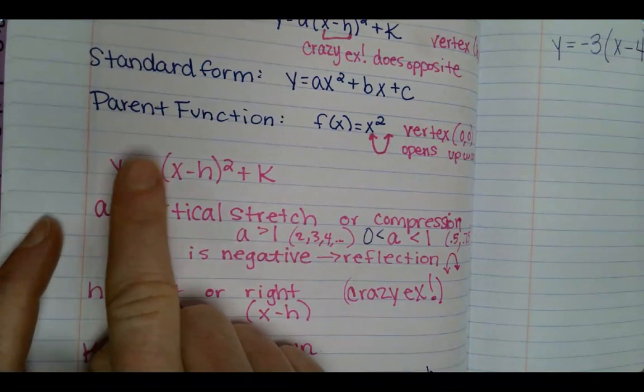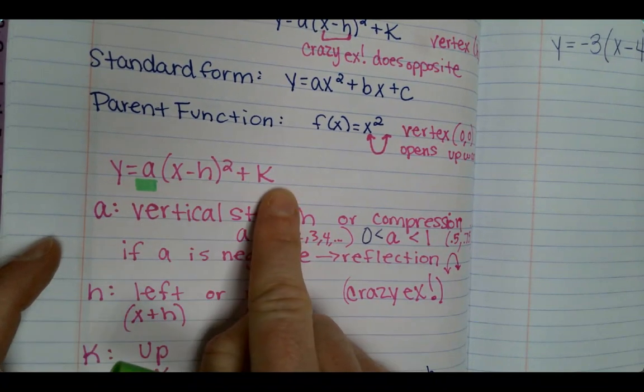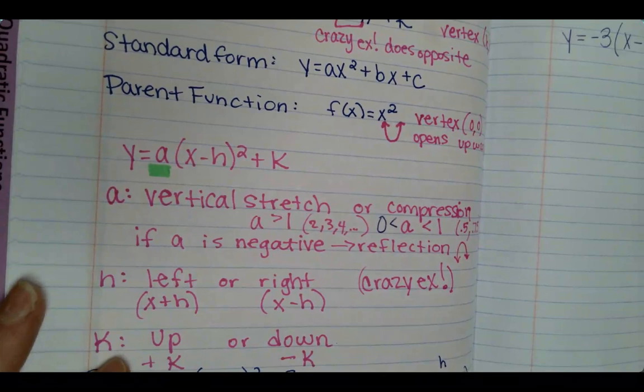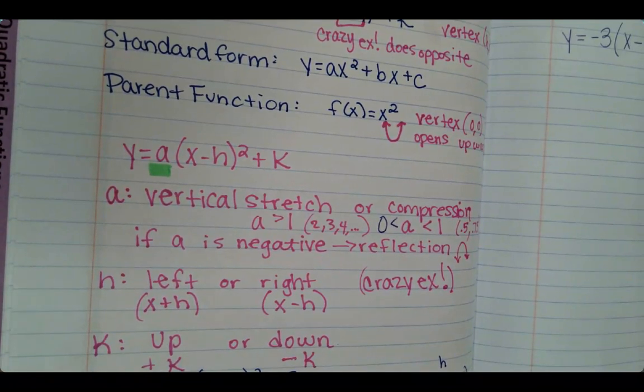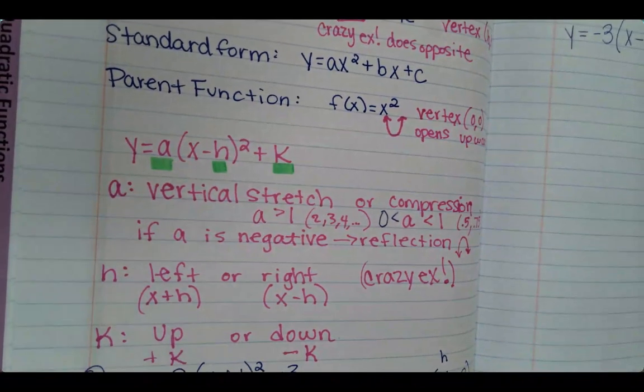We talked about the vertex form y equals a times parentheses x minus h squared plus k. So the a and the h and the k all do special things and they can only do that.